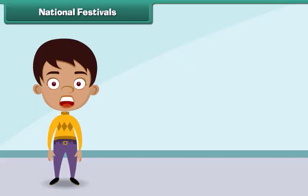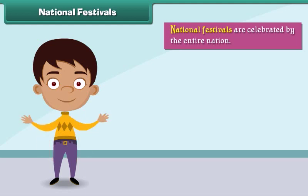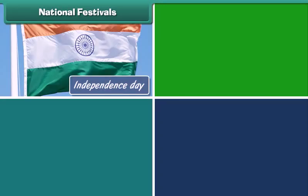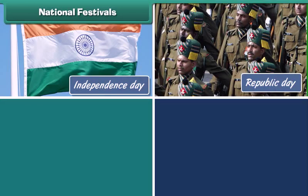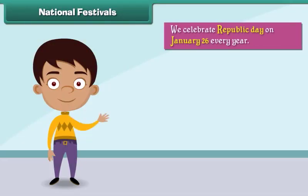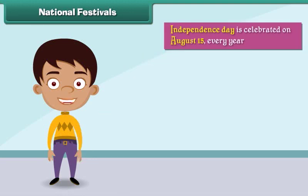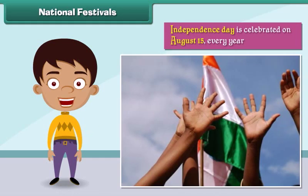National festivals are celebrated by the entire nation. Some important national festivals celebrated with great enthusiasm in India are Independence Day, Republic Day, Gandhi Jayanti, and Children's Day. We celebrate Republic Day on January 26 every year — on this day the Constitution of India came into force. Independence Day is celebrated on August 15 every year, the day India got freedom from the British.